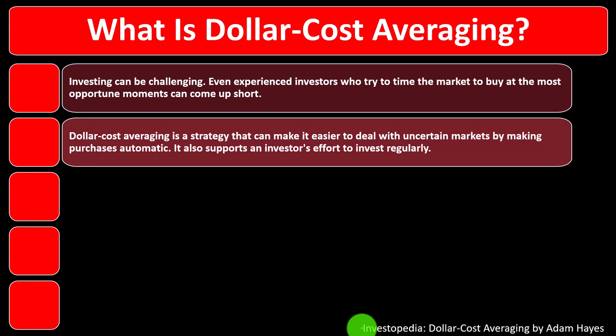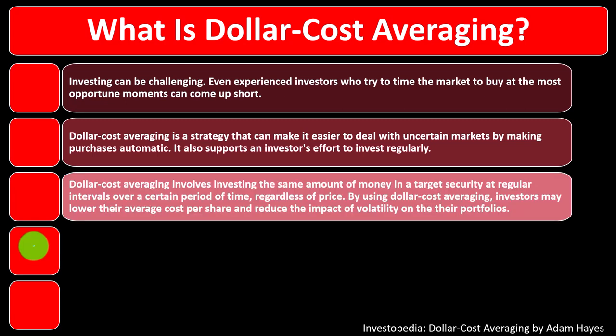Dollar cost averaging is a strategy that can make it easier to deal with uncertain markets by making purchases automatic, eliminating stress through routine investments. We're basically saying: I know there are going to be increases and decreases in the markets — I'm going to win some and lose some. Maybe it's not worth my time to try to outguess the most opportune time to invest, but rather spread my investments out as a long-term investor. This supports regular investing, especially for people who have another job and can't focus full-time on timing the market.